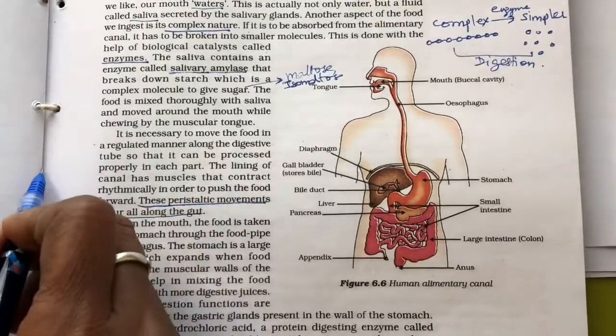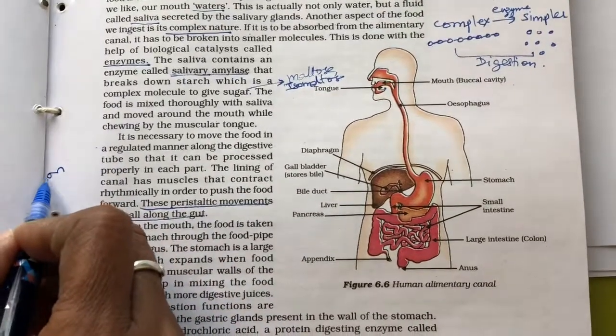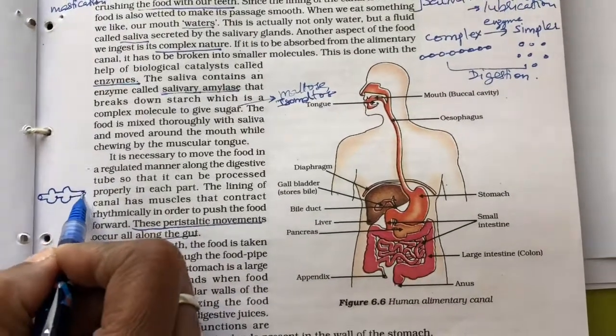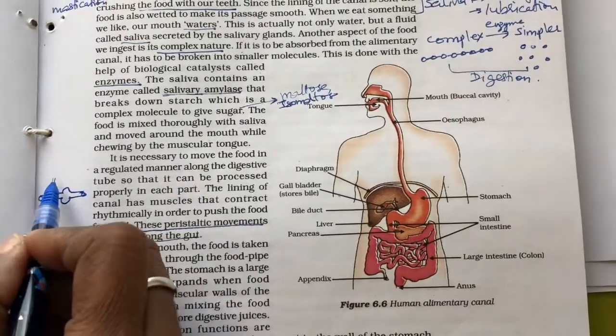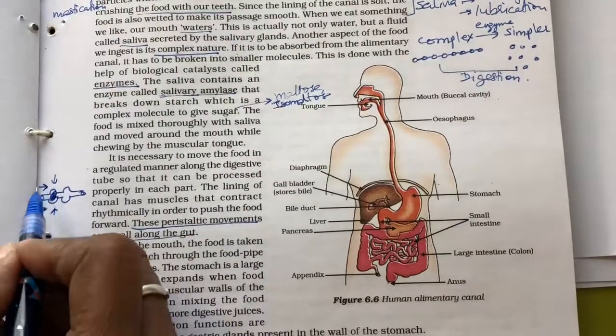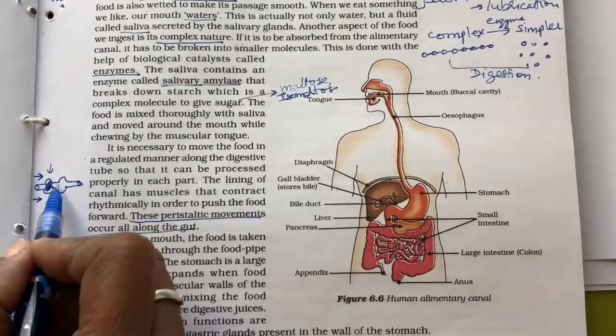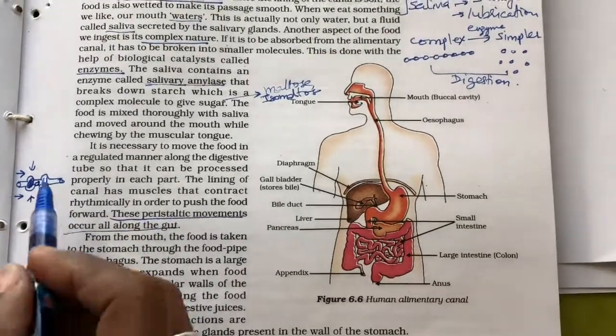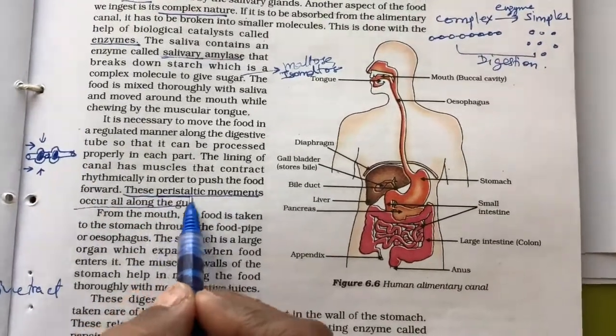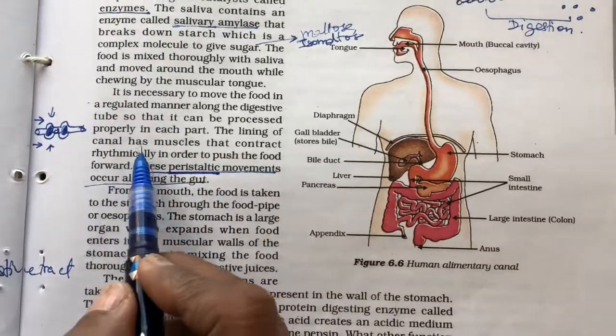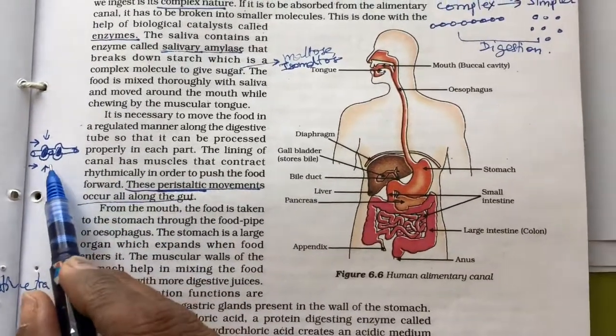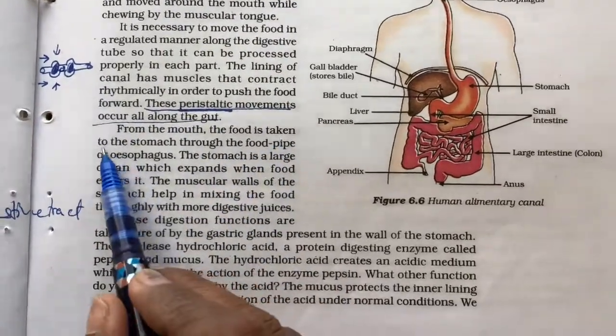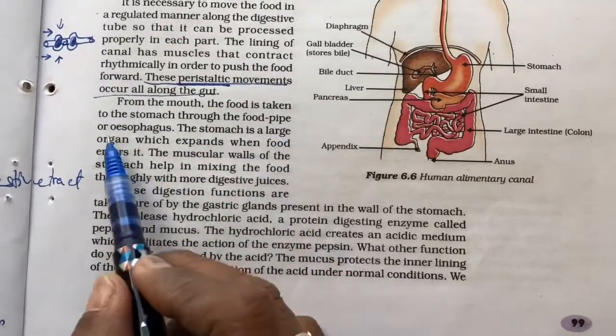So these movements are nothing but called the, these are like this. Suppose we have the food here, so this has to be moved forward by the contraction of the muscles. In both the ways, the circular as well as the longitudinal and the food will be pushed towards this side and this is what we say is a peristaltic movement. This is all because of the muscles, circular muscles and the longitudinal muscles present in the digestive tract. From the mouth, the food is taken to the stomach through the food pipe or esophagus.